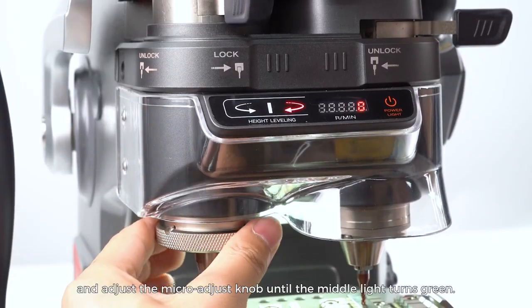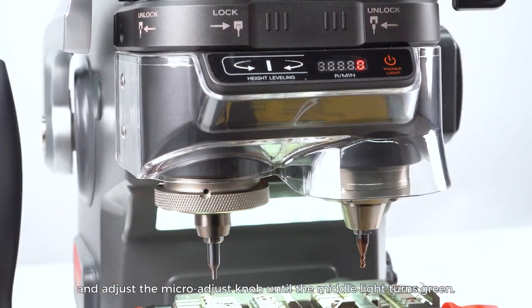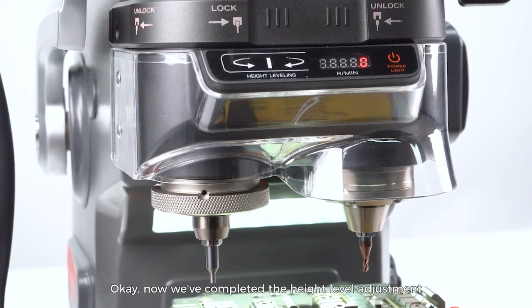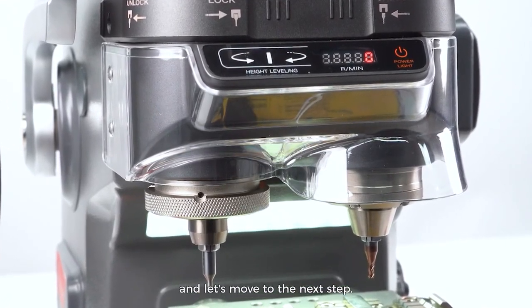Replace the cutter back and adjust the micro adjust knob until the middle light turns green. Okay, now we've completed the height level adjustment and let's move to the next step.